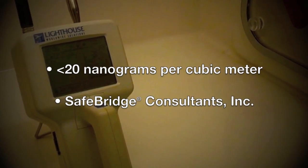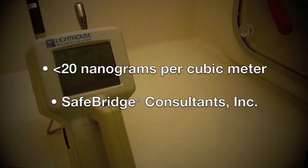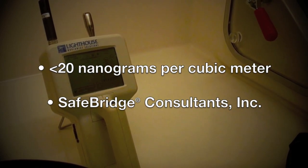Protector filtered glove boxes have also been particulate challenged showing containment down to less than 20 nanograms per cubic meter, with surrogate particulate test using naproxen sodium, confirmed by SafeBridge Consultants Inc.